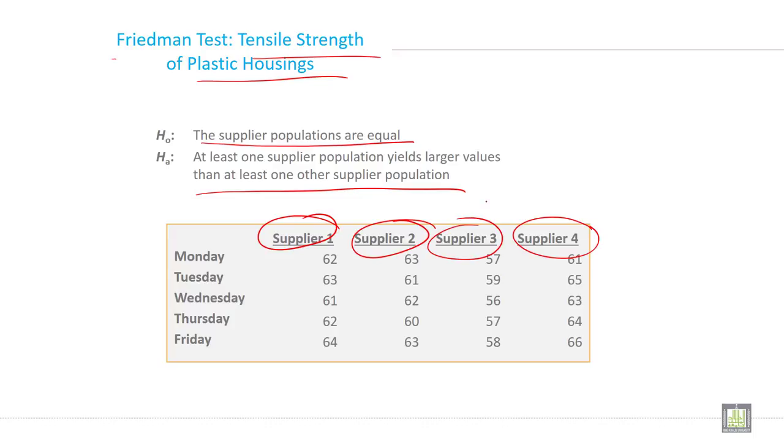Here you have four groups: supplier 1, supplier 2, supplier 3, and supplier 4. You have weekdays Monday, Tuesday, Wednesday, Thursday, Friday, and you have all these values.